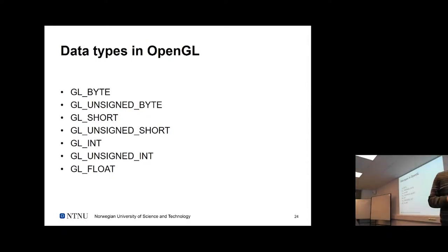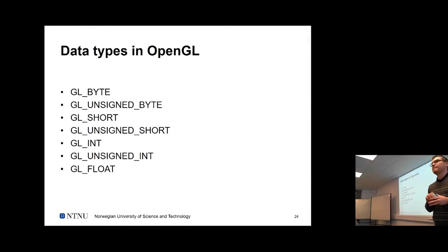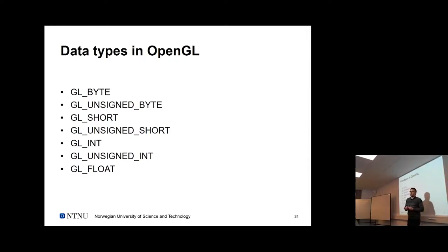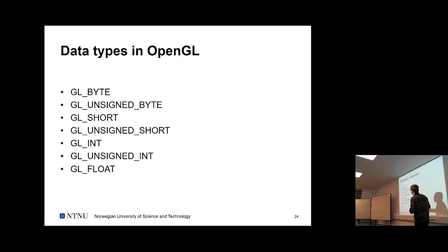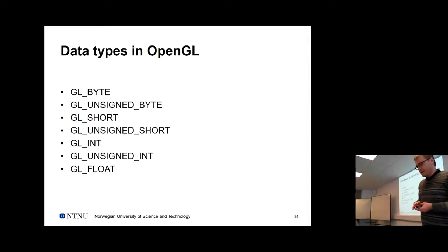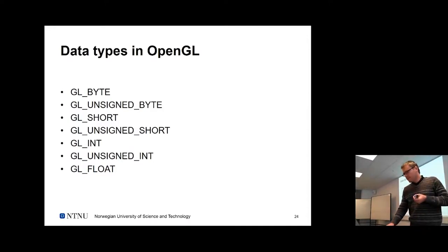Similar to functions, OpenGL data types have the prefix GL — that's how you differentiate them from C++ data types. Everything starts with GL, so it's a slightly different representation for the programmer. In C++ it doesn't make much difference, but you can't pass a GL float into a conventional float — you need to pass it into the corresponding OpenGL functions, which likewise start with GL.